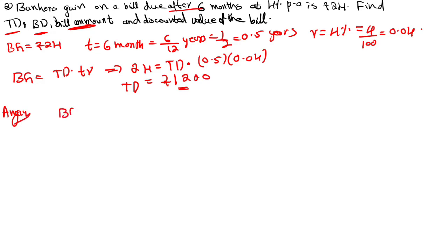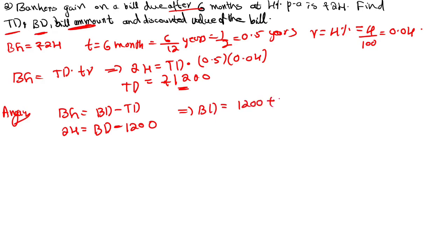Banker's gain equals BD minus TD. So BG is banker's discount minus true discount. BG value we have is 24. BD value we don't have — that you need to calculate — but TD is already calculated as 1200. This implies BD equals 1200 plus 24, therefore BD value is equal to 1224 rupees.